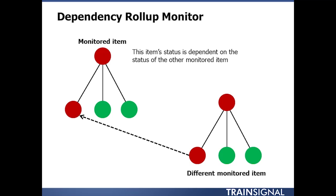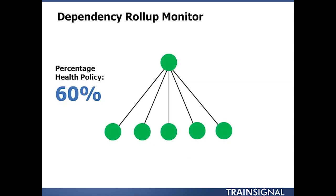This type of monitor also adheres to the previously discussed best and worst health states, but there is some additional flexibility here. You have the capability to define a percentage health policy. So suppose you've got those five monitored items and a percentage health policy of 60 percent.